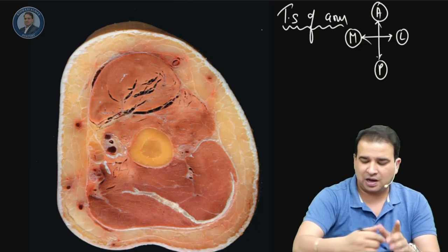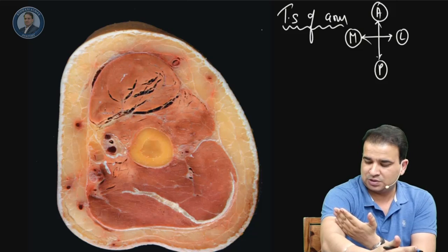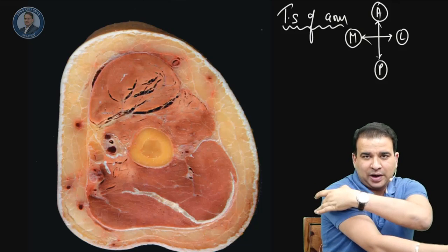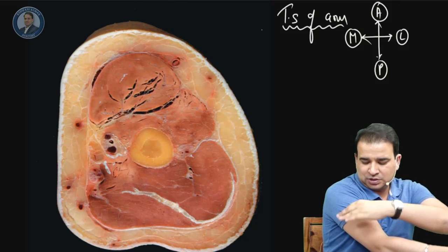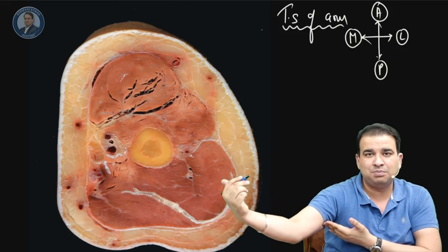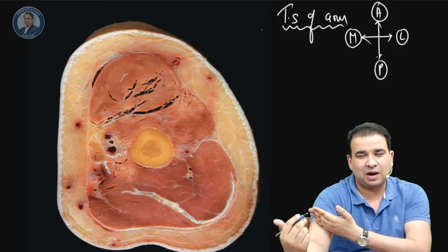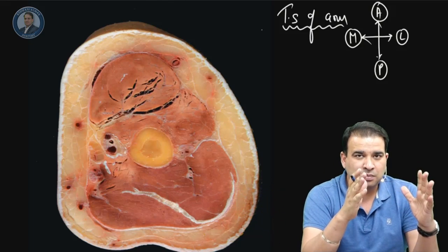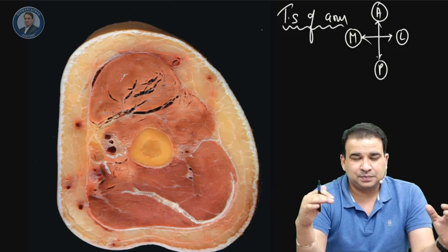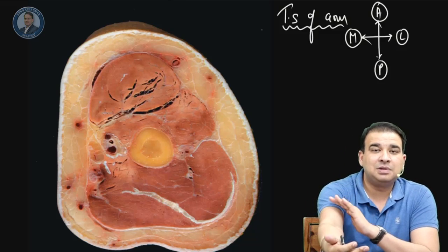If this is a section from the lower half, you do not expect to see deltoid or coracobrachialis. Deltoid inserts onto the deltoid tuberosity, which is in the middle of the arm on the lateral side, and coracobrachialis inserts onto the medial side of the shaft of the humerus. So in the lower half, neither will be present — but brachialis will.